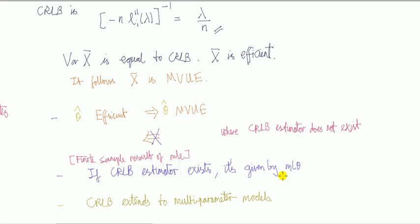Another property about the MLE that makes it so useful: the finite sample result of MLE—if the Cramér-Rao lower bound estimator exists, it turns out it's given by the MLE in general.